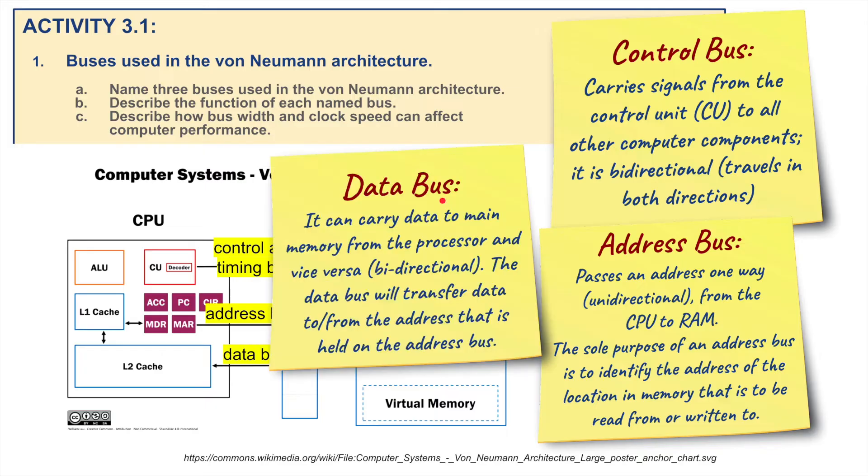And finally Data Bus. It carries data to memory from the processor and vice versa. From the CPU and vice versa. So it's going backwards and forwards. But what's it doing? Well it's carrying data. The Data Bus will transfer data to and from the address that is held in the Address Bus. So the Address Bus knows where it needs to live, the Data Bus is transferring that data either to or fetching it from. We're talking about the fetch, decode, execute cycle that we've mentioned before in Chapter 2.